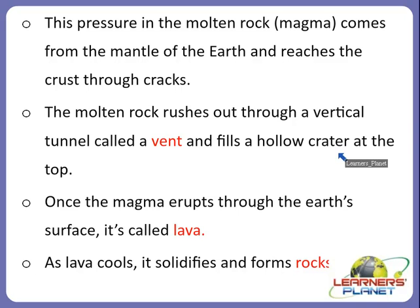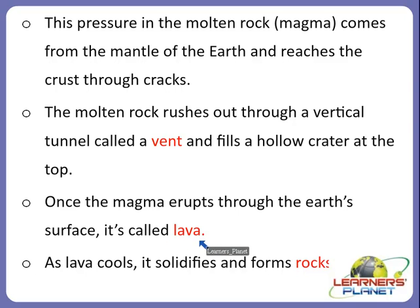Once the magma or molten rock erupts through the earth's surface, it is called lava. This is the main difference between magma and lava: when liquid rock is inside the earth it is called magma, and when it erupts out through the earth's surface it is called lava. As the lava cools, it solidifies and forms rocks, and in this way rocks are formed from volcanoes.